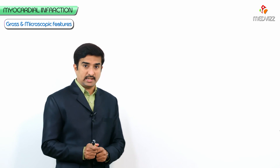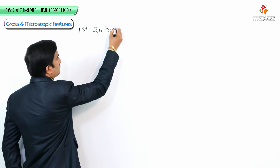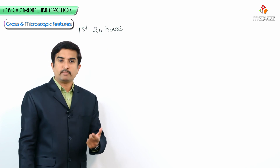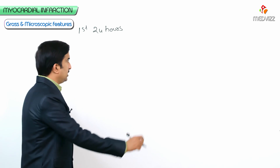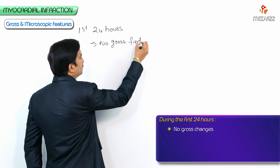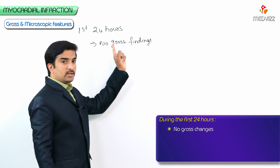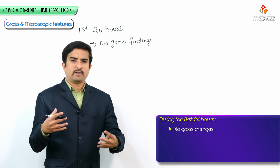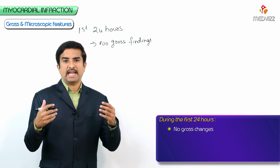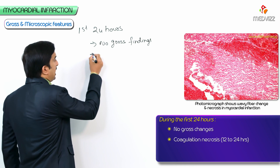During the first 24 hours after acute myocardial infarction, there are no gross findings seen until 24 hours, except some subtle mottling of the tissue you can identify. But there is no clear-cut evidence visible on the myocardium, and coagulative necrosis is also not yet clearly apparent.